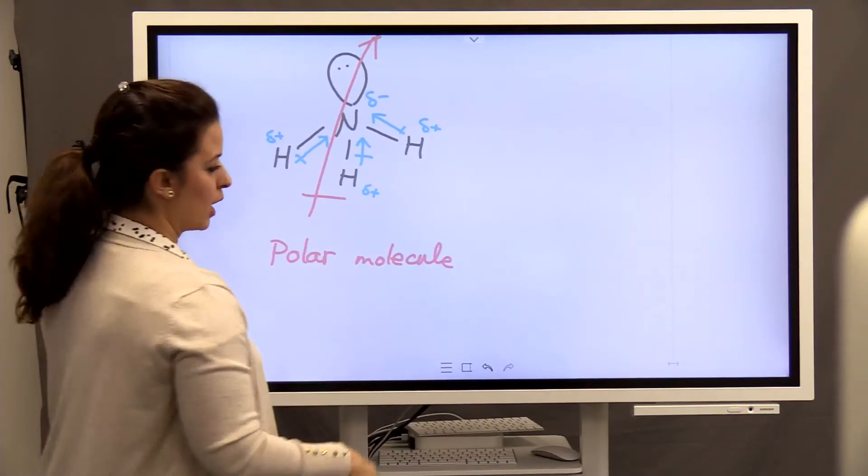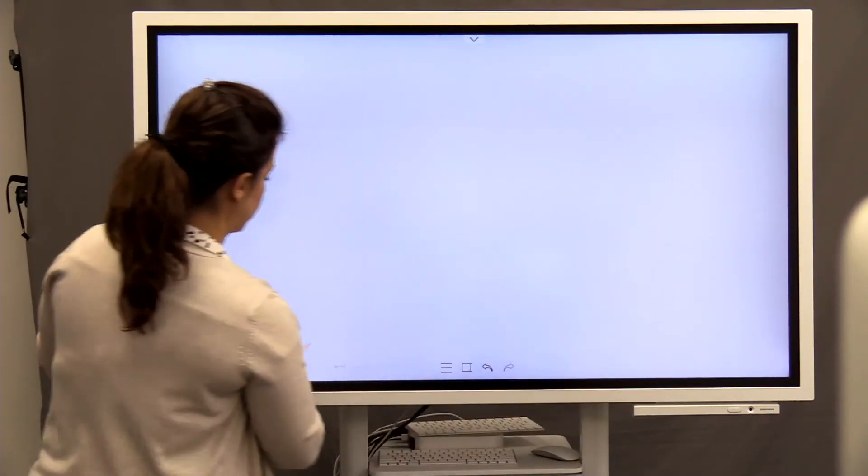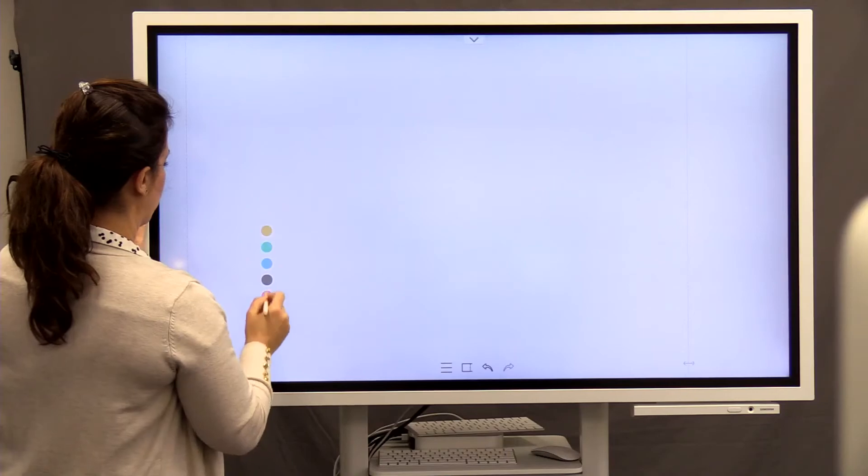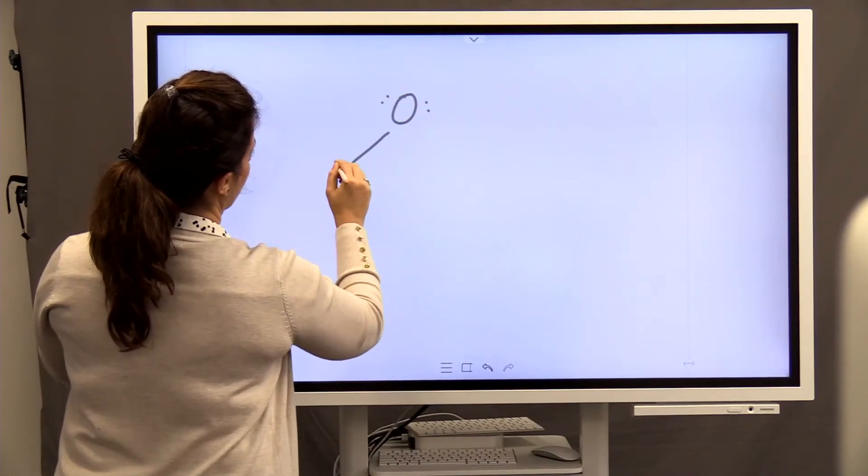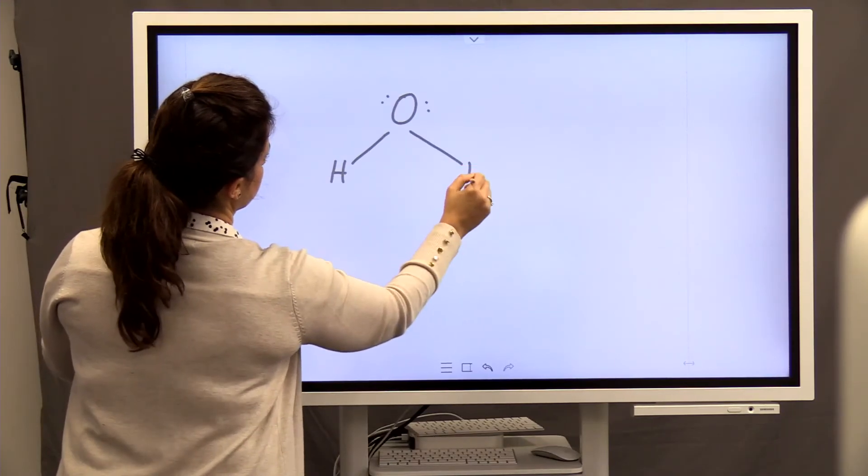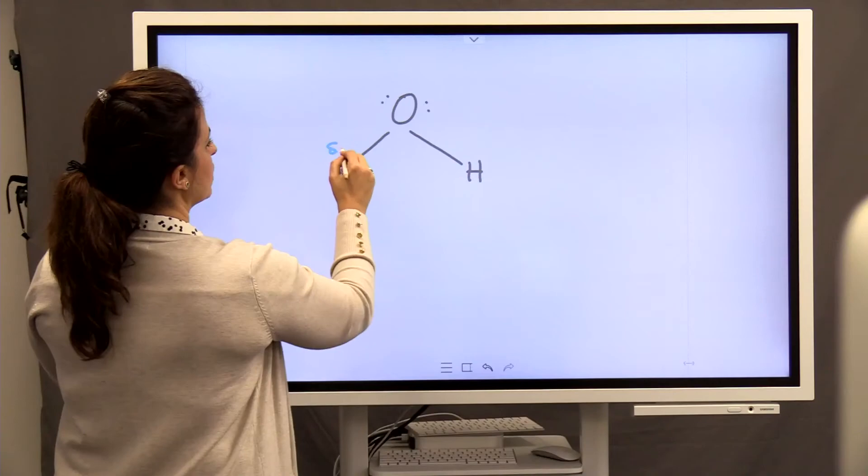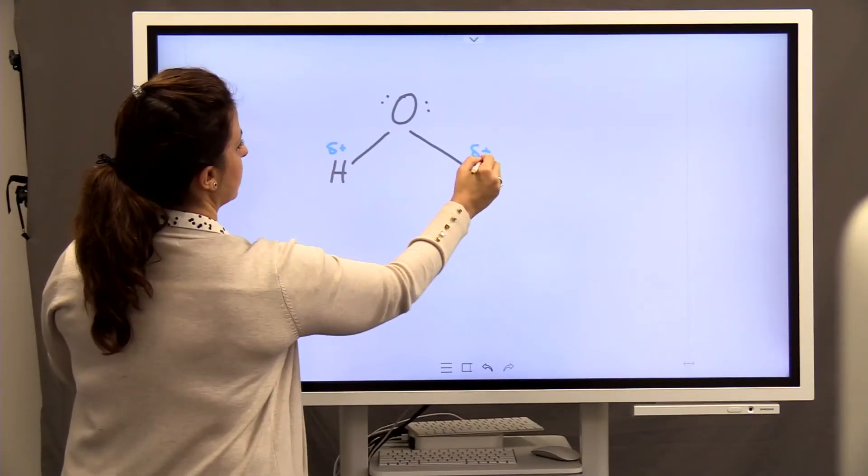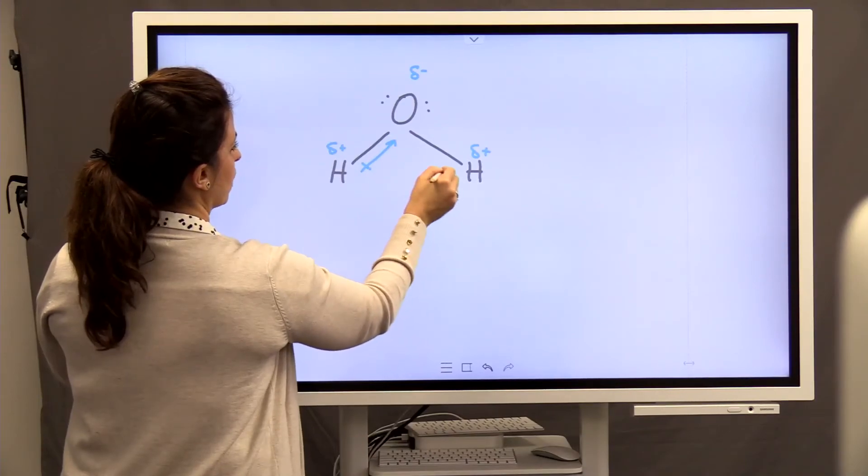Make sense? Let's work on water molecules as the last molecule in this part. When you draw the Lewis structure, you have such a structure. So, hydrogens are partially positive.